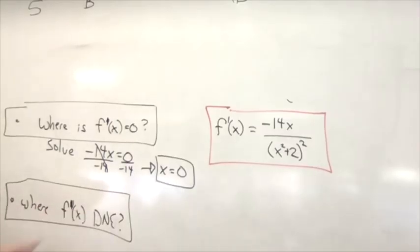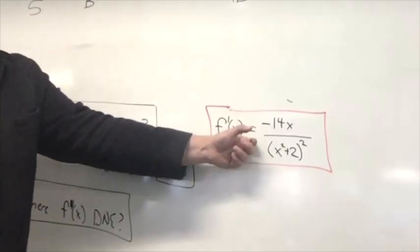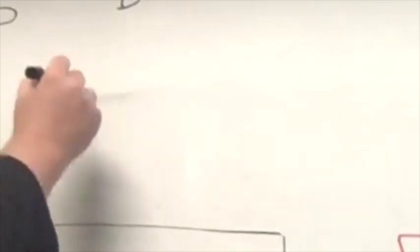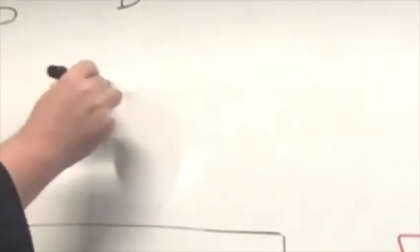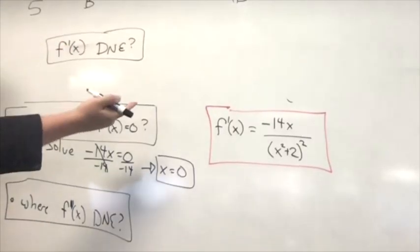Now, where does f prime of x not exist? The only way this can happen is if the denominator is 0, because this is not something where we're going to have to deal with like a jagged corner from a piecewise function. So where does f prime of x not exist? Well, what we need to worry about for f prime of x not existing is the denominator being 0.